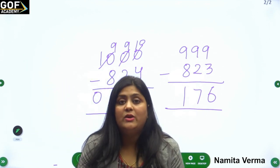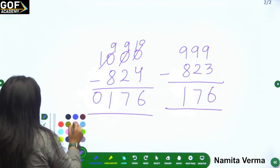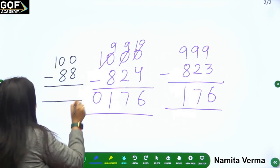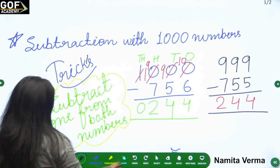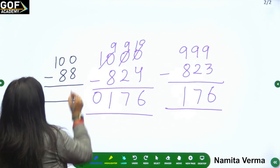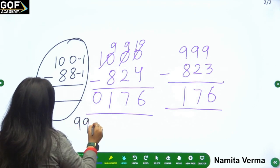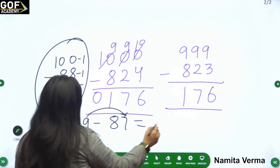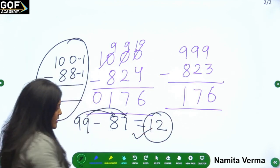You might be thinking — does this work with hundreds too? Yes, the same method works with hundreds as well. Suppose you have 100 minus 88. If we subtract one from both sides, we get 99 minus 87. Now 99 minus 87: 9 minus 7 is 2, 9 minus 8 is 1 — answer is 12!